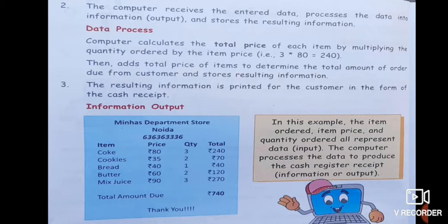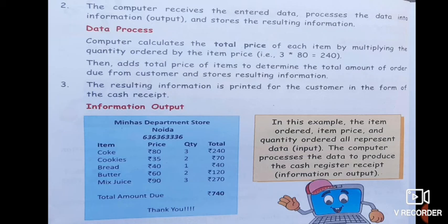So this is the processing part. First, we enter what items we want into the computer. Then the computer works on it — that is, processing the data — calculating each and every thing. And the last point is: the resulting information is printed in the form of a cash receipt. A picture of this receipt is given in your books, which is the processed form of data — which we call information. So now it should be clear to all of you what is data and what is information. After processing the data, we get the information.